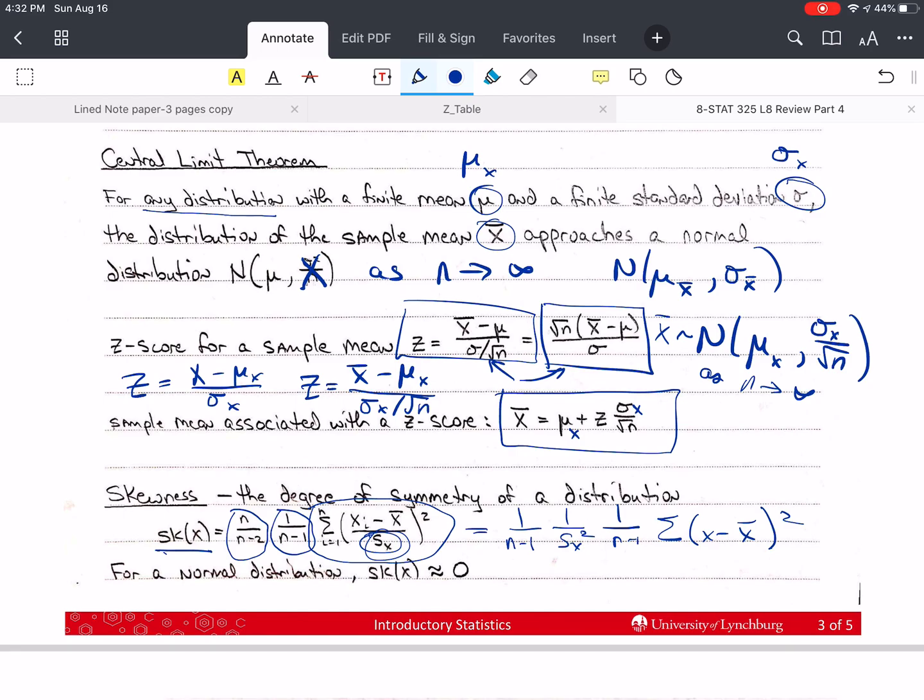For a normal distribution, what we need to know is that the skewness should be really close to zero, because the normal distribution is not skewed. It's symmetric.